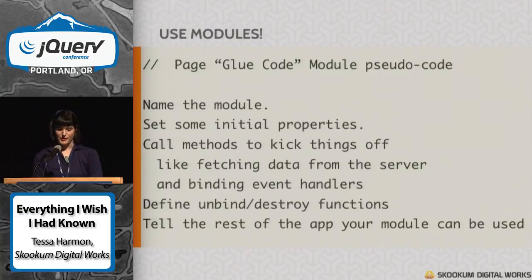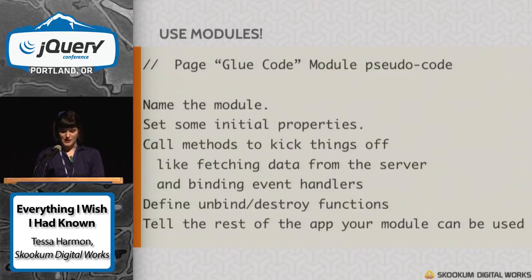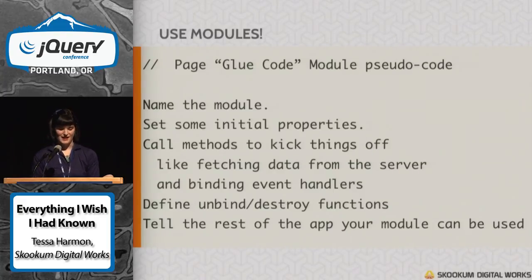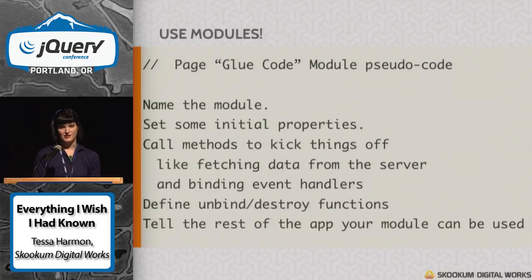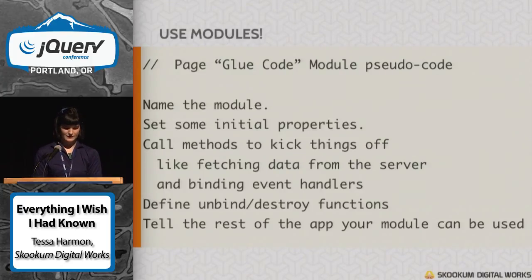Here's some pseudocode to show how I set up a module for a state of an application. First, you give the module a name, set some initial properties, go out and fetch data from the server, and bind all of your event handlers. Then it kind of hangs out until the route changes, and then everything gets destroyed and cleaned up. You have to declare the module so that other modules of your app can require it.